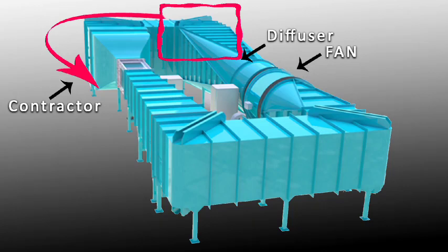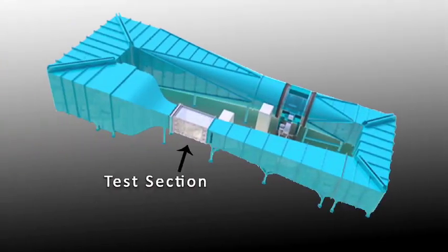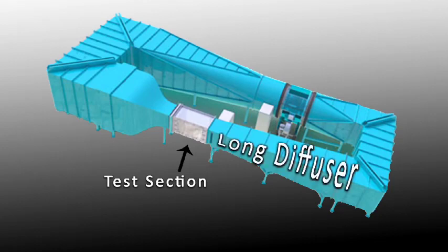Then we run it through the contractor which speeds the air back up so now we have smooth, turbulent free air that we're bringing into the test section and then it's returned through a long diffuser to the fan.